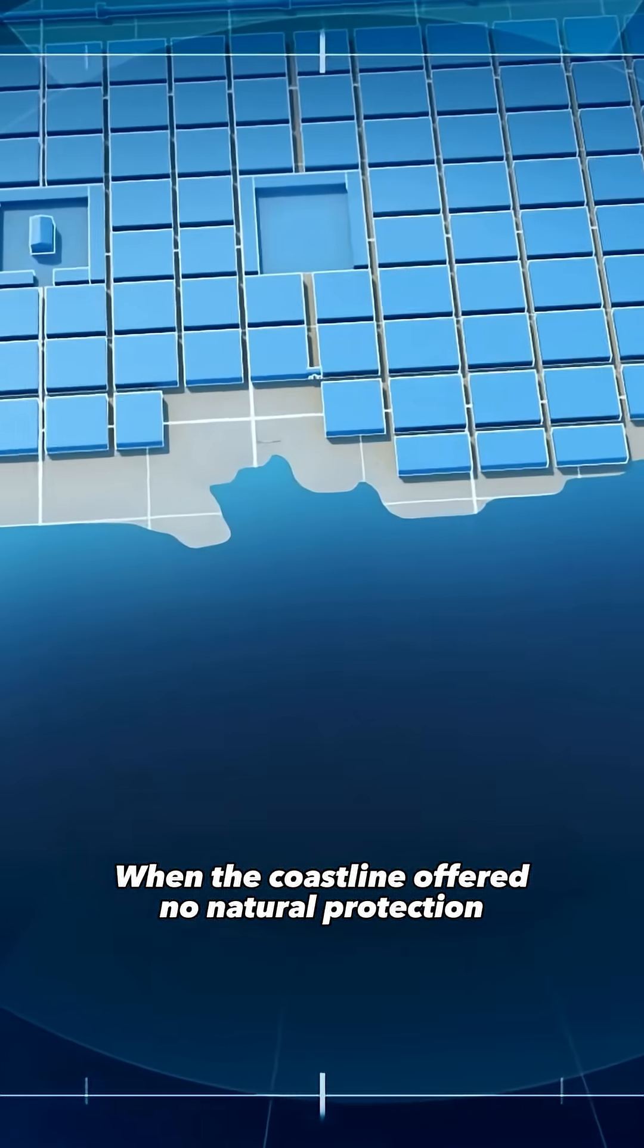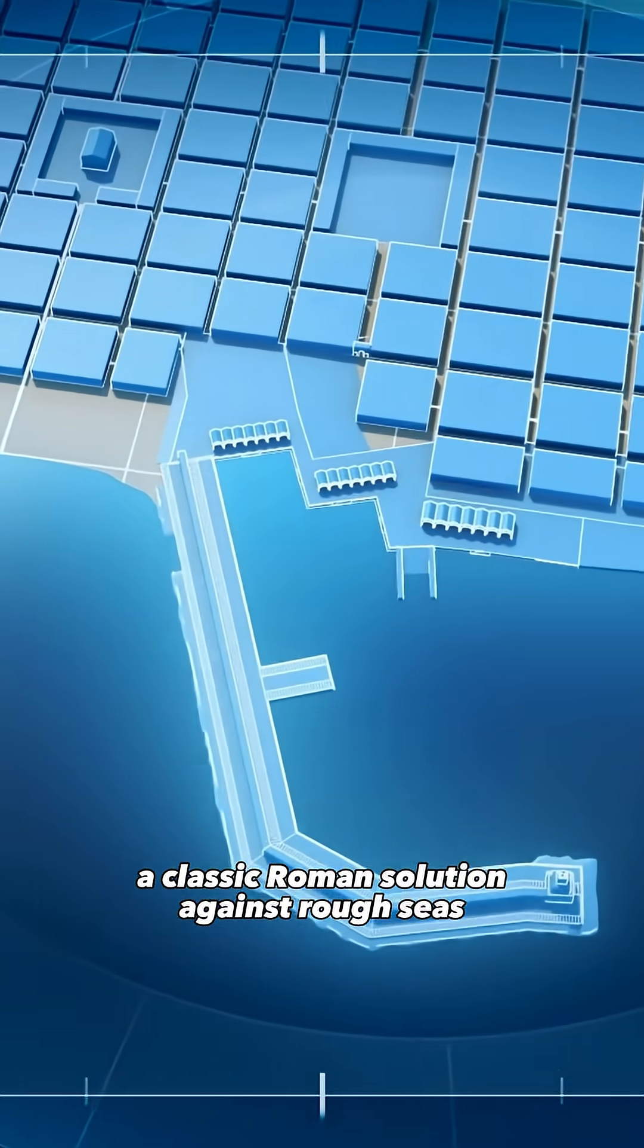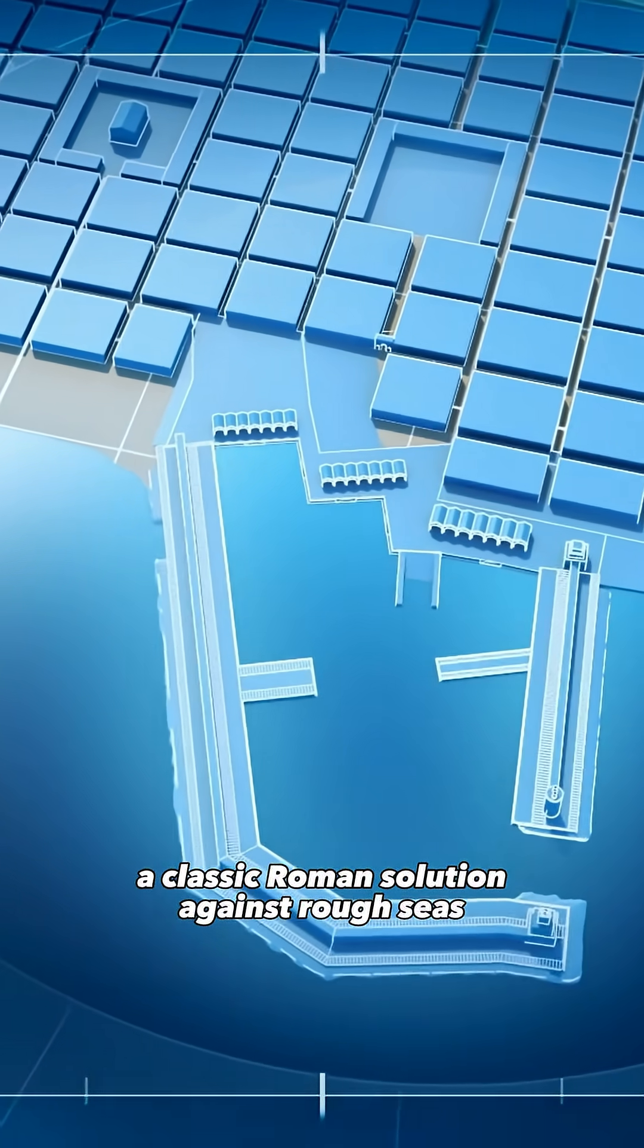When the coastline offered no natural protection, they built both a breakwater and a counter-breakwater, a classic Roman solution against rough seas.